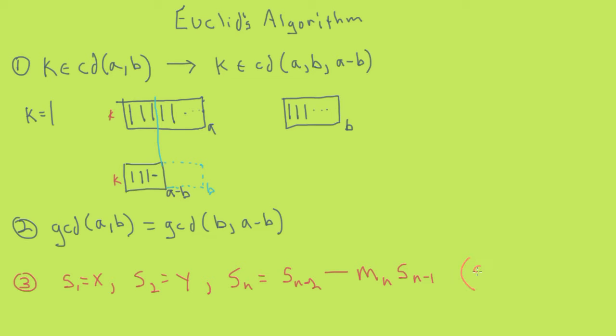Where the multiple is chosen such that sn is greater than or equal to 0 and is strictly less than sn minus 1. Another way of saying this is that sn is equivalent to the remainder of sn minus 2 divided by sn minus 1. And another way of saying this is that sn equals sn minus 2 mod sn minus 1.